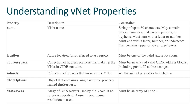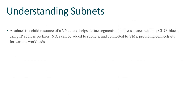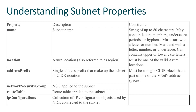A subnet is a child of a VNet. VNets are larger objects — VNets contain subnets. You can have many subnets within a single VNet and use network security groups to control routing between them. The properties for a subnet include the name, location, address prefix in CIDR notation, any network security group, the routing table if you want custom routing, and any IP configurations you want assigned to that subnet.